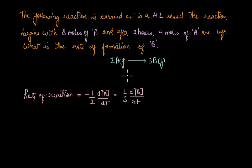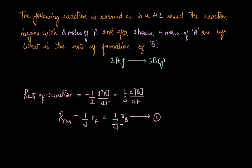This is how the rate of reaction looks like, taking into account the stoichiometry of the reaction. We can simplify this as: reaction rate equals one-half times R_A equals one-third times R_B, where R_A is the rate of disappearance of A (i.e., R_A = −dA/dt), and R_B is the rate of formation of B (i.e., R_B = dB/dt).